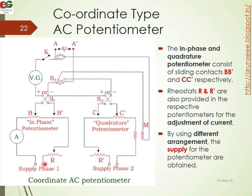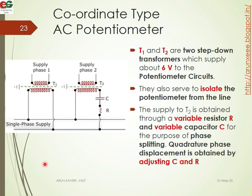The supply of the potentiometers is obtained using two transformers, T1 and T2. T1 is a step-down transformer which supplies six volts to the potentiometer circuit. Using a transformer also serves as an isolator, separating the potentiometer from the line. The supply to T2 is obtained through a variable resistance R and variable capacitance C for the purpose of phase splitting, so that a 90-degree phase difference is obtained between the two potentiometer circuits. The quadrature phase displacement is adjusted by varying C and R.